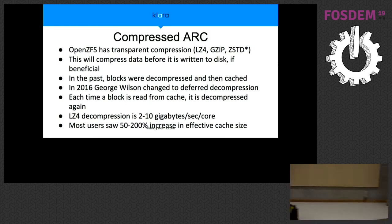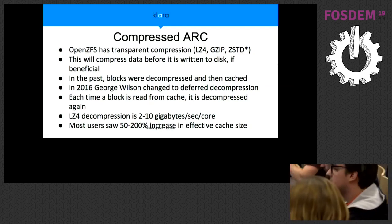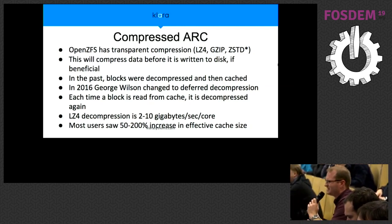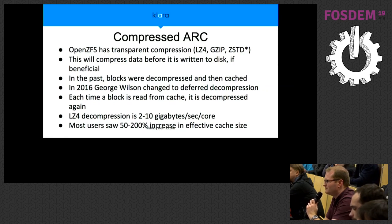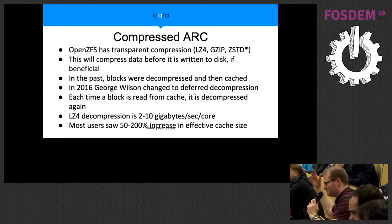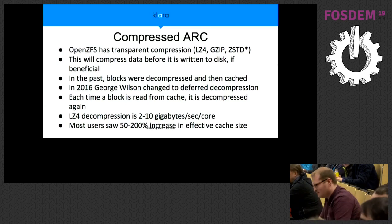Q: If you have a ZFS volume with compression enabled and existing data that's uncompressed, does the compressed ARC still load it uncompressed? Yes — with compressed ARC, the copy in the ARC is always exactly the same as the copy on disk so that the checksum can be verified each time without storing a second checksum. So if you want to take advantage of the compressed ARC, you'd have to rewrite the data to make sure it gets written compressed, or use ZFS replication to send to a second pool and have it written compressed. Pro tip: turn compression on before you write any data.